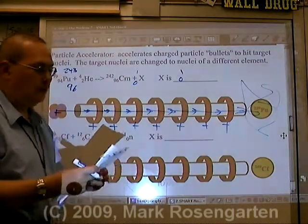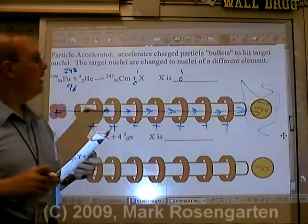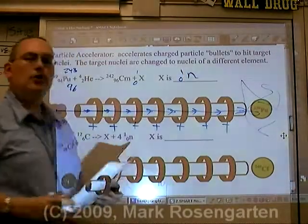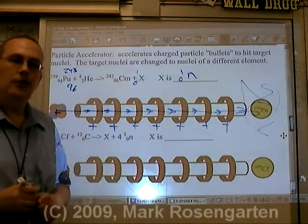Now, to find what this mystery particle is, we look on reference table O. What's got a mass of 1 and a charge of 0? A neutron. So, a neutron is given off when curium is formed from this artificial transmutation.